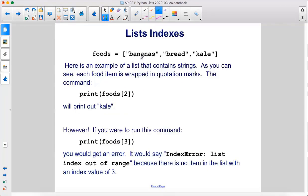Here's an example of a list that contains strings. As you can see, each food item is wrapped in quotation marks. The command print foods two will print out kale, because foods zero is bananas, foods one is bread, foods two is kale.